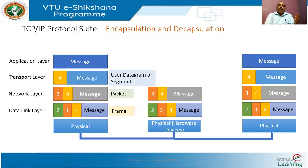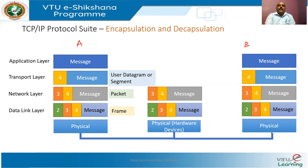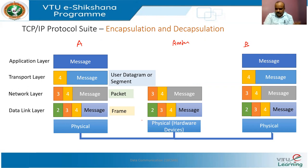Let's start with encapsulation and decapsulation. I am taking two laptops, laptop A and laptop B, with an intermediate device that is a router. I'm calling it a router because it has three layers: physical layer, data link layer, and network layer. Let's see how these layers handle data — that's what encapsulation and decapsulation are about.